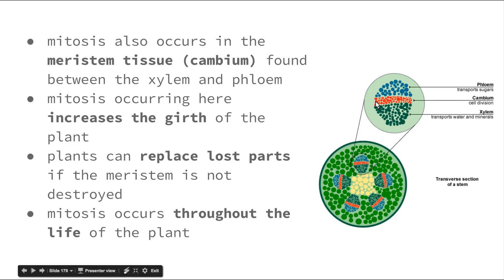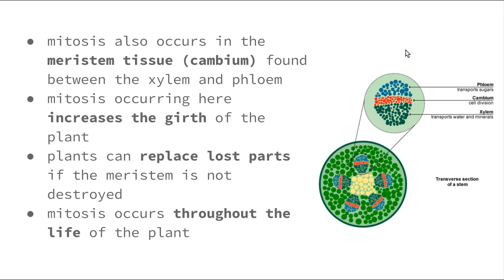Each year, a new layer of cambium is laid, and that helps us to identify the age of plants — this gives us the tree rings we see when trees are cut down. Plants can also replace lost parts if the meristem is not destroyed, so they can continue to regrow flowers and leaves. When you cut the top off a flower or the bottom off the roots, the plant can actually regrow more of the same.